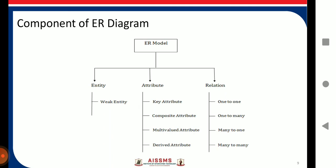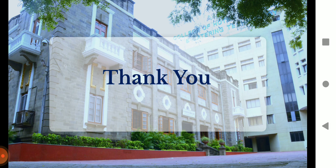Then attribute is the next component of the ER diagram. So here attribute, it has key attribute, composite attribute, multivalued attribute, and the derived attribute. Then we can map the relation by using one to one relationship, one to many, many to one, and many to many. So in the next part, I'm going to explain all those things. Thank you.